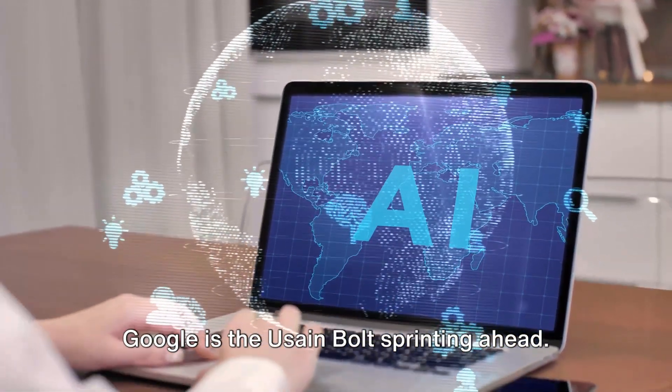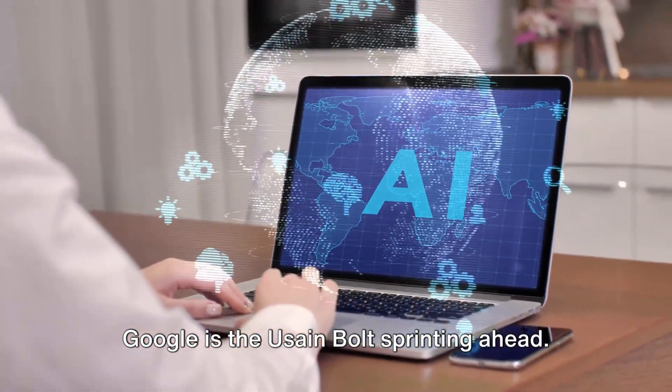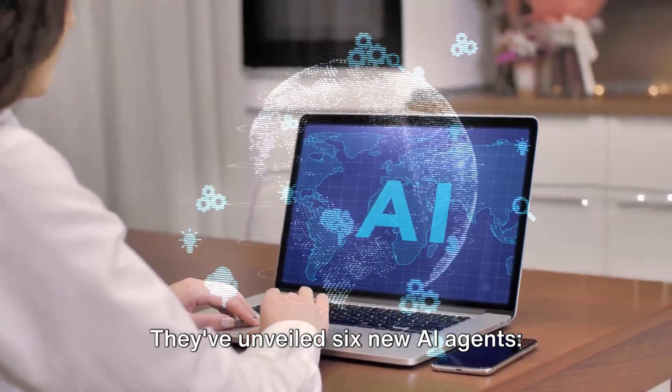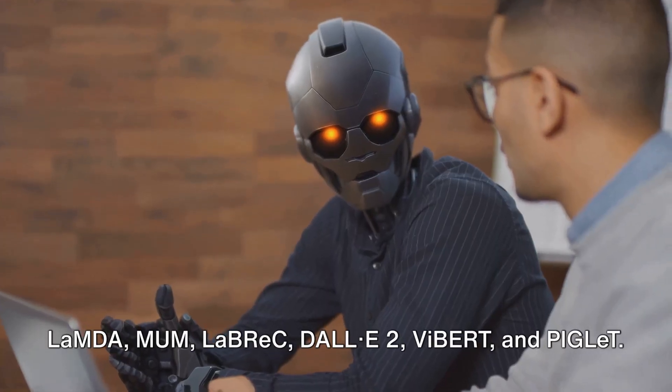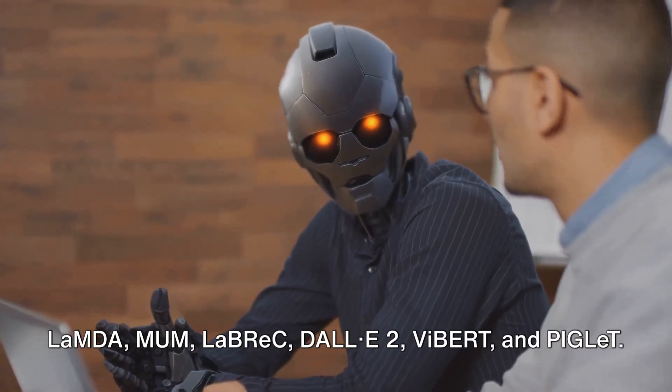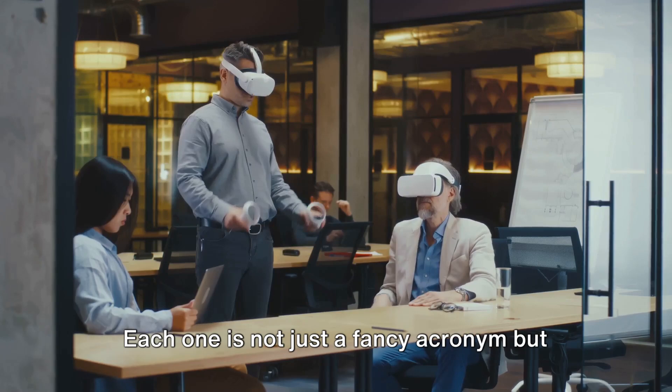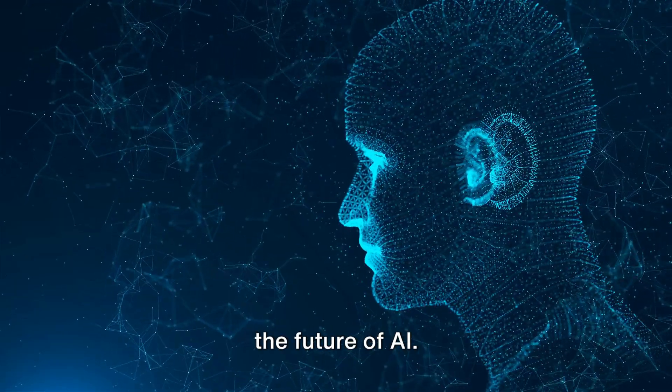In the breakneck race of technology, Google is the Usain Bolt sprinting ahead. They've unveiled six new AI agents: Lambda, Mum, Labrec, DALI 2, Vibert, and Piglet. Each one is not just a fancy acronym, but the future of AI.